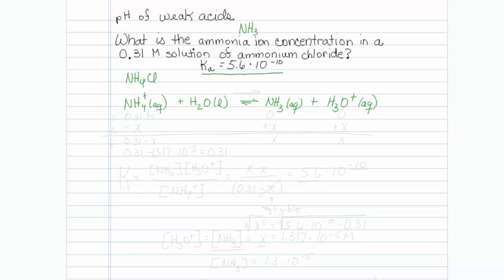Let's set this up like an equilibrium table. We start out initially with 0.31 molar ammonium and no ammonia or hydronium. The reaction is going to shift to the right, so we're going to lose some ammonium and make ammonia and hydronium such that on the final equilibrium row we have 0.31 minus x, x, and x.